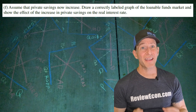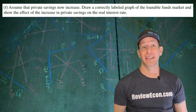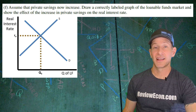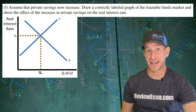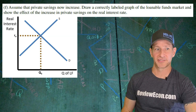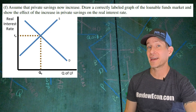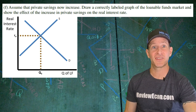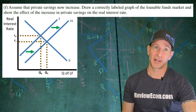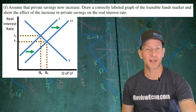For part F, we assume that private savings increases. We draw a correctly labeled graph of the loanable funds market: the Y axis is the real interest rate, the X axis is the quantity of loanable funds, with a downward sloping demand curve and an upward sloping supply curve, marking the equilibrium real interest rate and equilibrium quantity. That gets your first point. Since private savings have increased, the supply of loanable funds shifts to the right, causing the real interest rate to decrease and the equilibrium quantity of loanable funds to increase. That correct shift and impact earns another point.